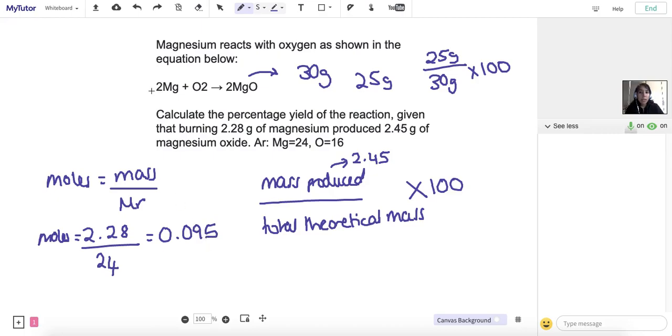If we then look at our balanced equation, we can see that 2 moles of magnesium produces 2 moles of magnesium oxide, which means it's in a 1 to 1 ratio. So if we react 0.095 moles of magnesium, that means we're going to produce 0.095 moles of magnesium oxide.